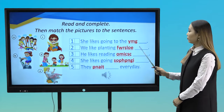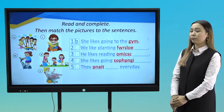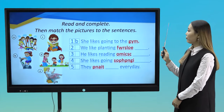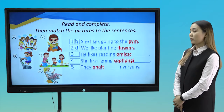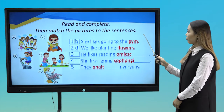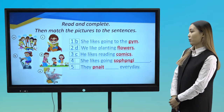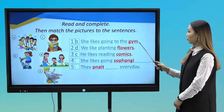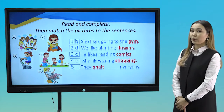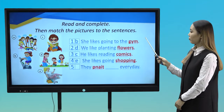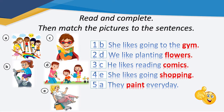Let's check. One: b — She likes going to the gym. Two: d — We like planting flowers. Three: c — She likes reading comics. Four: e — She likes going shopping. Five: a — They play every day. Good job.